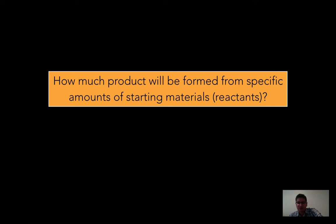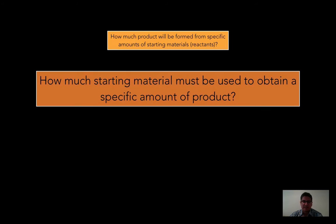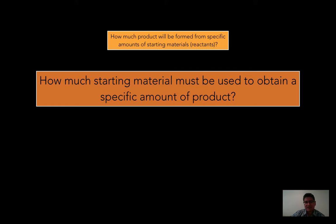How much product will be formed? So if you have a specific amount of reactants, of elements, how much will you actually produce after the reaction has taken place? The other question to consider is how much starting material must be used to obtain a specific amount of product. So when you're doing a lab, when you're doing chemical work, you might just need a very specific amount of a product.